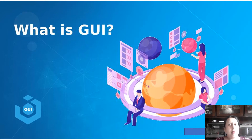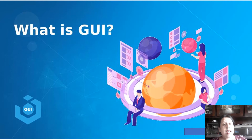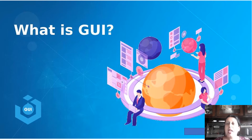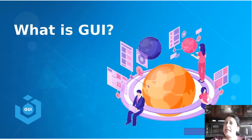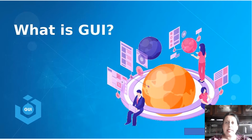Because there is an interface between the operating system and the application where we can actually use it. Now Windows is an operating system and it is GUI based. GUI is Graphical User Interface. Now let me give you a very simple example.